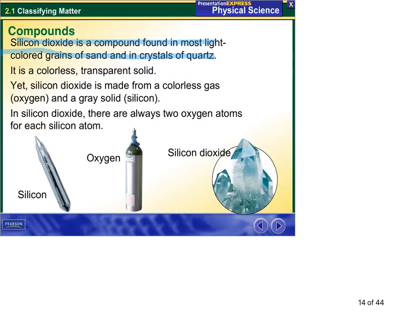You'll see it in rocks like granite. A tremendous amount of rocks have silicon dioxide or quartz in it. And it's a colorless transparent solid shown here.